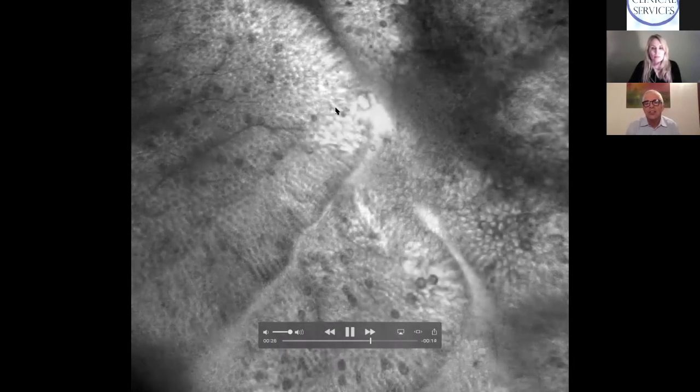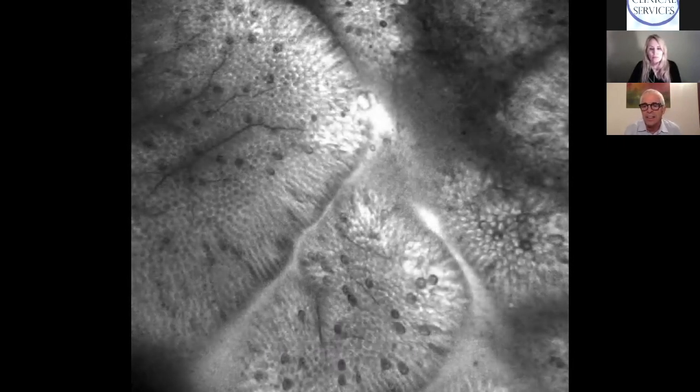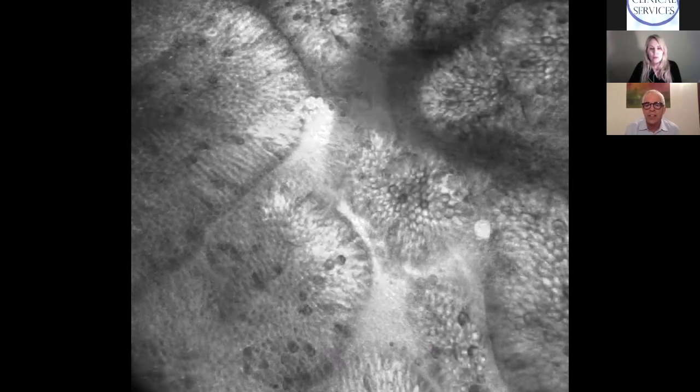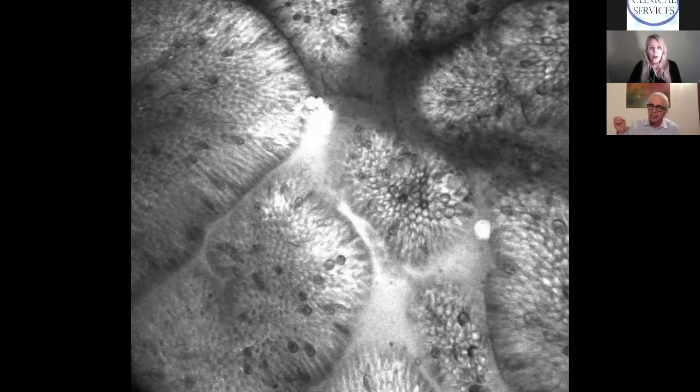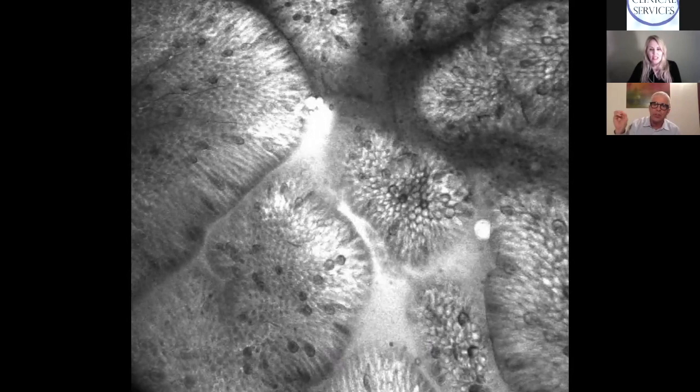This is intestinal permeability or the leaky gut in reverse. When they expose the gut to wheat, this dye is out in the lumen within five minutes.